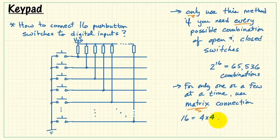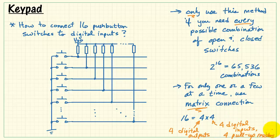16 is 4 times 4, and with the matrix approach, you only need 4 digital outputs and you only need 4 digital inputs. That's a total of 8 versus 16. We also would only need 4 pull-up resistors instead of 16 pull-up resistors. The matrix connection uses far fewer resources.